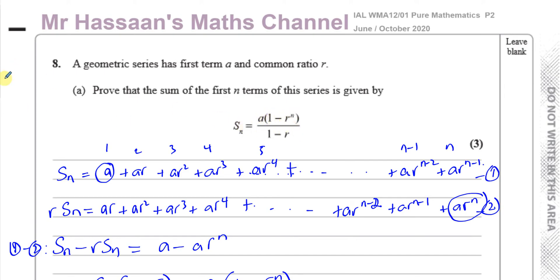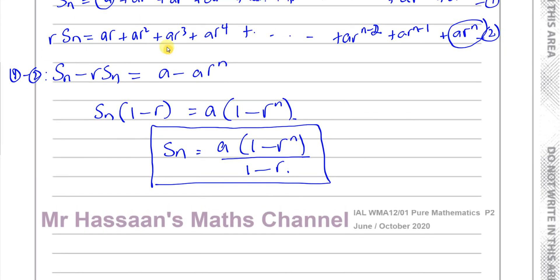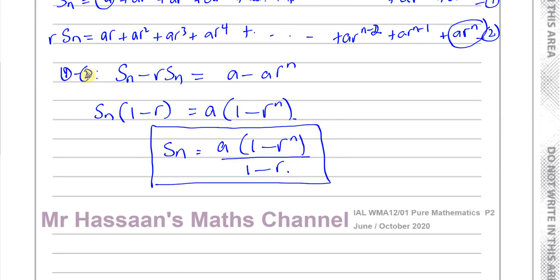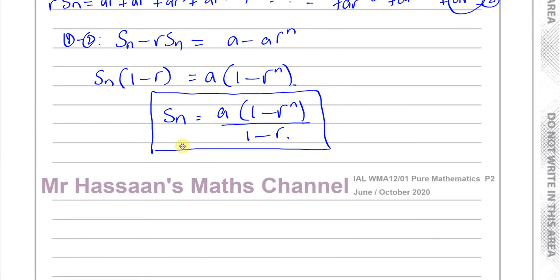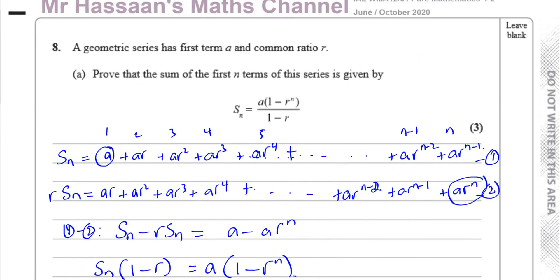So that's a proof you should know — it's very important. You write down Sₙ as A + AR + AR² + AR³ + ... + AR^(n-1), then write RSₙ with all powers increased by 1. Subtracting the two lines, you're left with A and AR^n because everything else cancels, giving Sₙ − RSₙ = A − AR^n. Factorizing and simplifying gives Sₙ as a subject. That's part A done.